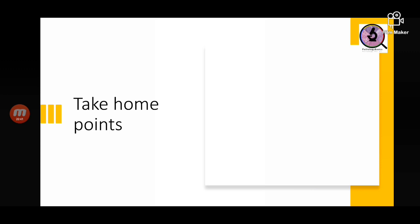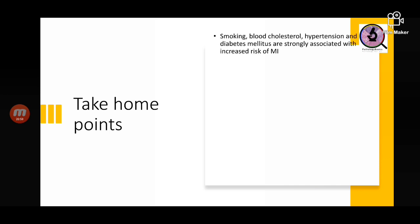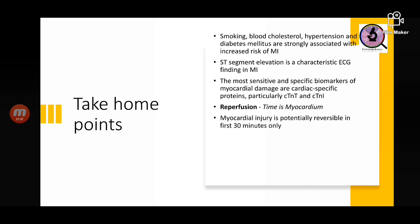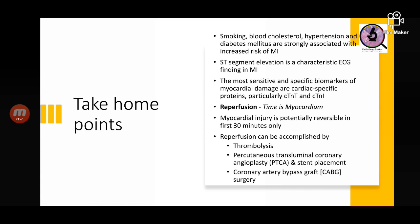In summary, this covers myocardial infarction from a pathology perspective. Key points: smoking, blood cholesterol, and hypertension along with diabetes mellitus are strongly associated with risk of MI. On ECG, ST segment elevation is a characteristic finding. Cardiac troponin T and I are the most sensitive and specific biomarkers. Time is myocardium — the earlier the intervention, the more myocardium can be saved. Myocardial injury is reversible in the first 30 minutes. Reperfusion can be accomplished by thrombolysis, angioplasty, and coronary artery bypass graft.